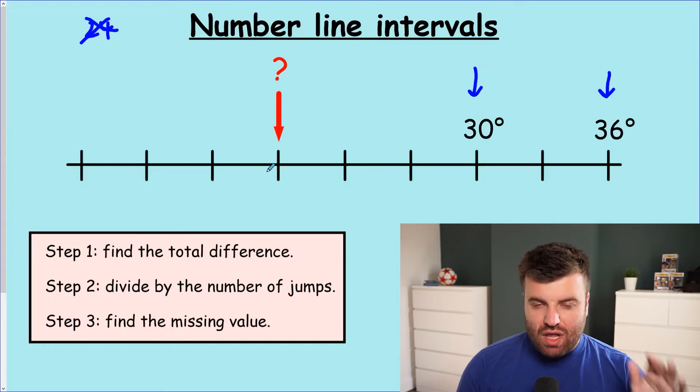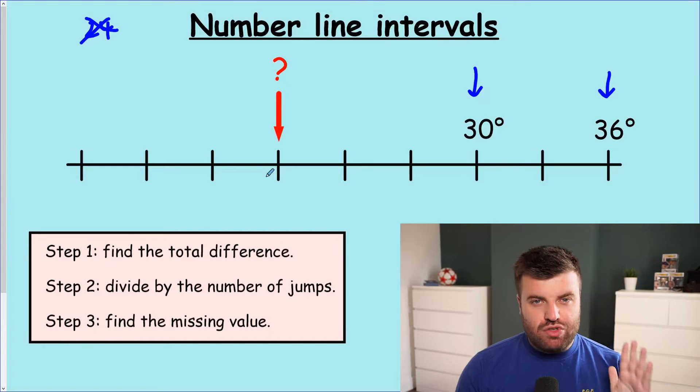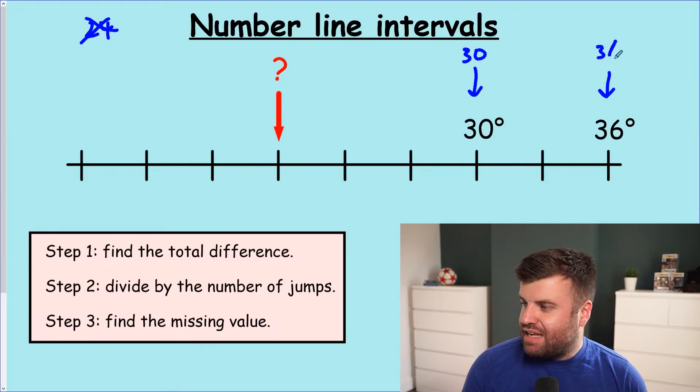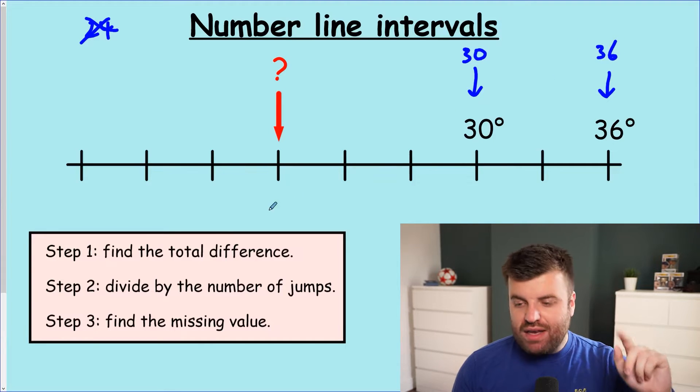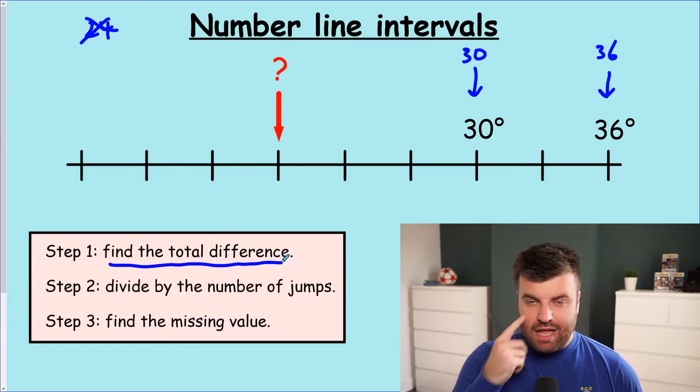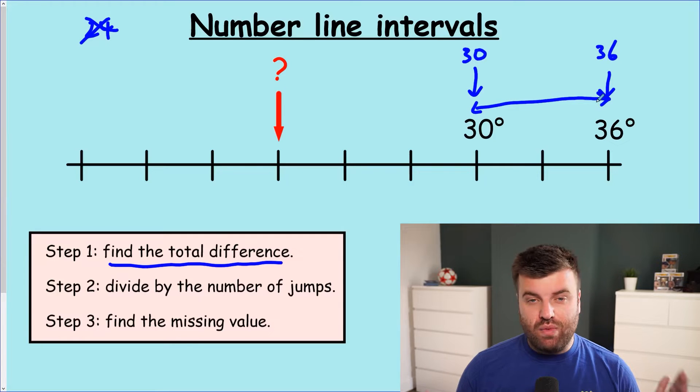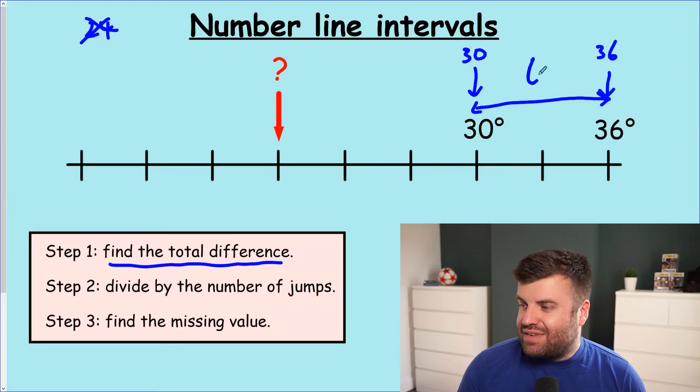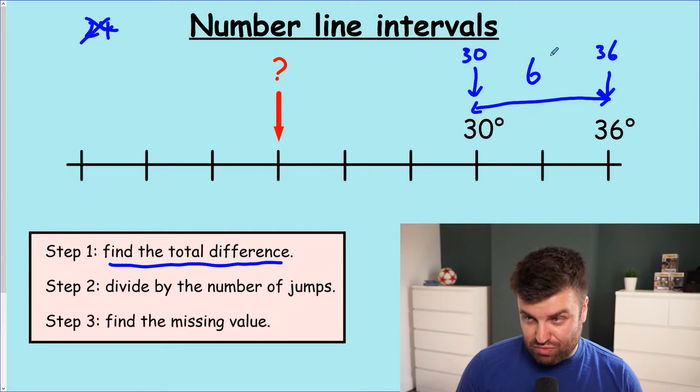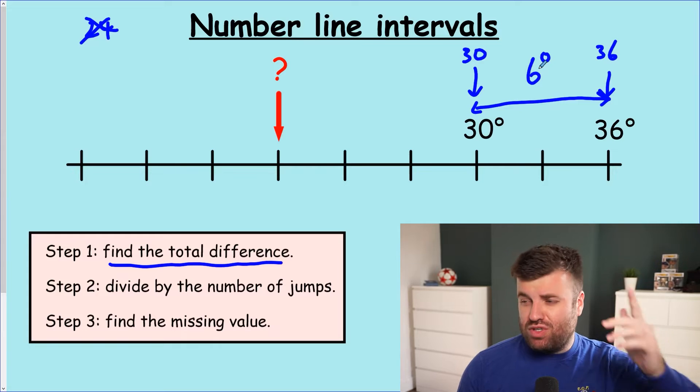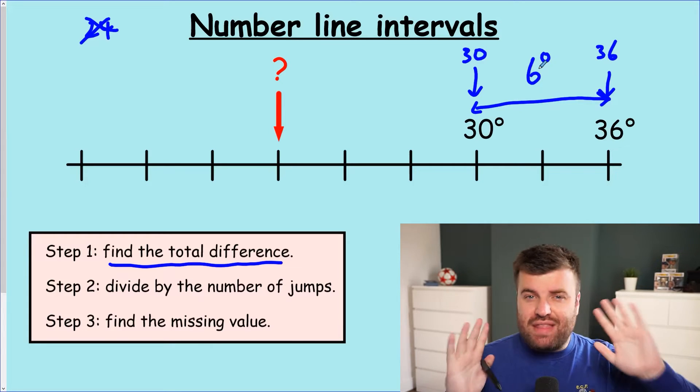So step one. In these questions, you'll always be given two values, and that's important. Here we've got 30. I'll write them out again, even though they're underneath, 30 and 36. Step one is to find the total difference. That's between the two values that you're given. So between 30 and 36, what's the difference? Well, we could do 36 take away 30. You might be able just to see with this example that the difference here is six, and we're talking about degrees in this scale. So this is six degrees. So we noticed that earlier when we had a guess, we saw there was six degrees difference, but that's not the final step.